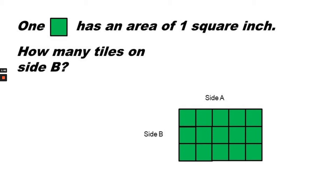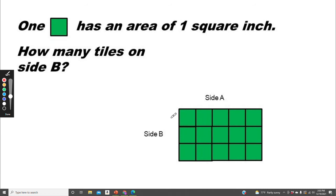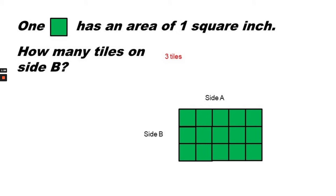How many tiles on side B? One, two, three tiles. What is the length of side B? Remember that each square is one inch long by one inch wide. If there are three tiles, then the side would be three inches long.